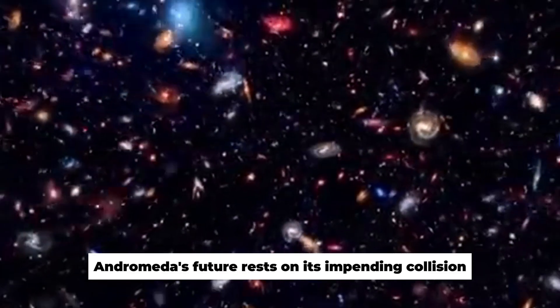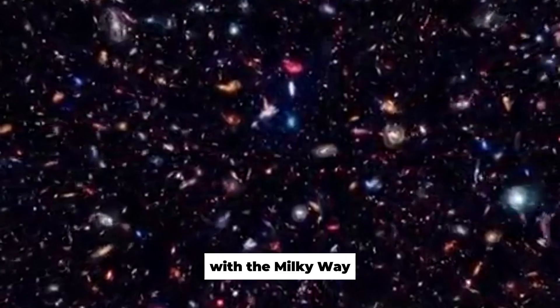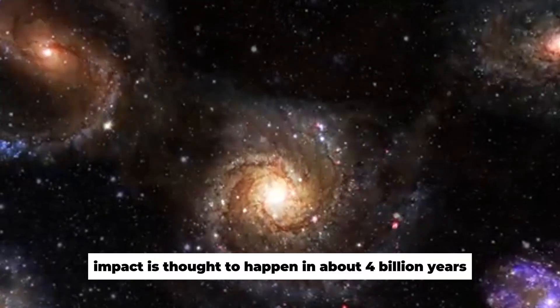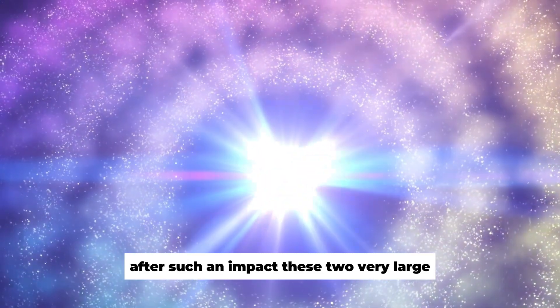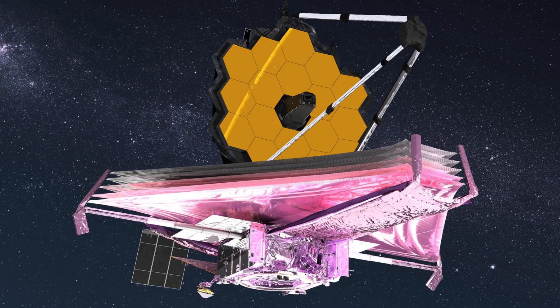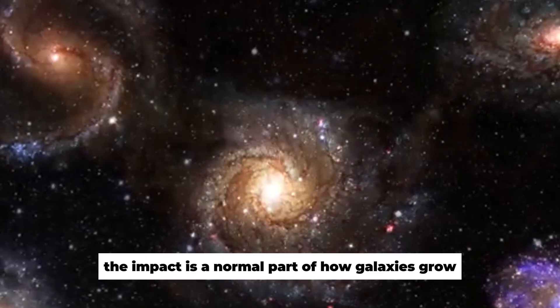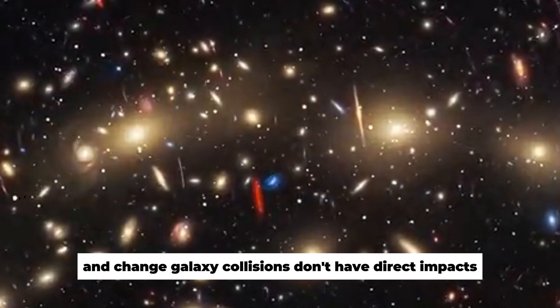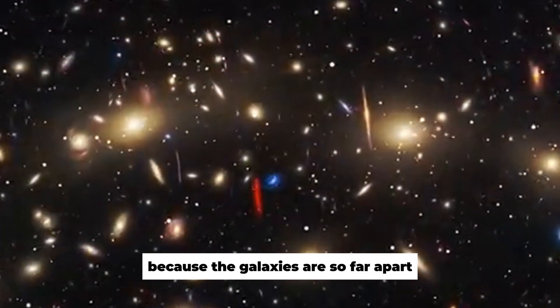In the end, Andromeda's future rests on its impending collision with the Milky Way. Based on these models, the impact is thought to happen in about 4 billion years. After such an impact, these two very large celestial bodies will give birth to a new galaxy. Even though the impact is a normal part of how galaxies grow and change, galaxy collisions don't have direct impacts because the galaxies are so far apart.